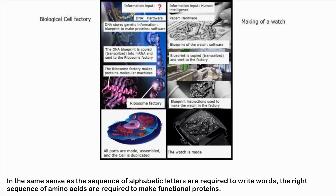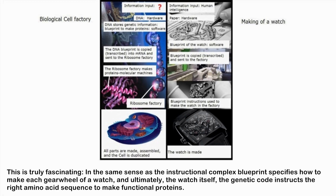In the same sense as the sequence of alphabetic letters is required to write words, the right sequence of amino acids is required to make functional proteins. Just as an instructional blueprint specifies how to make each gear wheel of a watch, and ultimately the watch itself, the genetic code instructs the right amino acid sequence to make functional proteins.